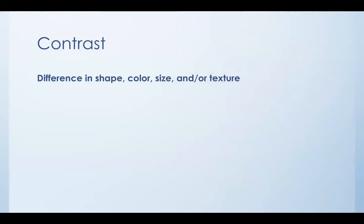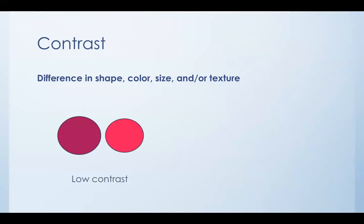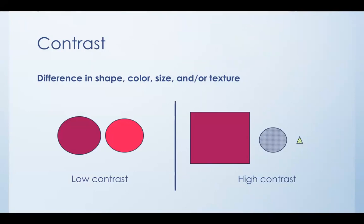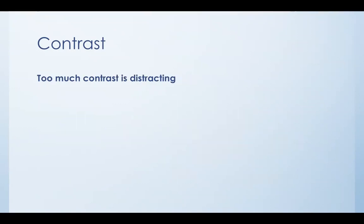Contrast is a difference in shape, color, size, and/or texture. Contrast allows you to pull out certain visual elements of your poster to draw people's eye to them. When you have low contrast, there isn't much difference between those four elements. When you have high contrast, there is a very marked difference between shapes, colors, sizes, and textures, as you can see on the right-hand visualization. It is important to note, though, that too much contrast is distracting. In this beginning poster, before we have applied any visual design elements to it, you can see differences in size, texture, color, and shape all at once.